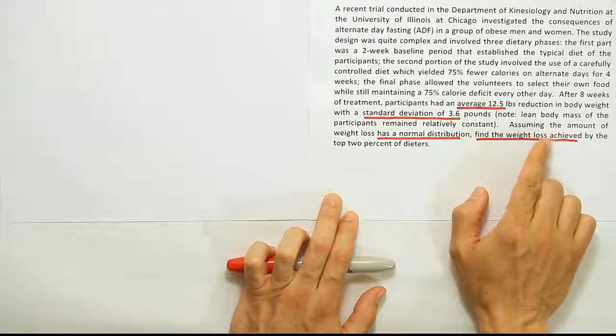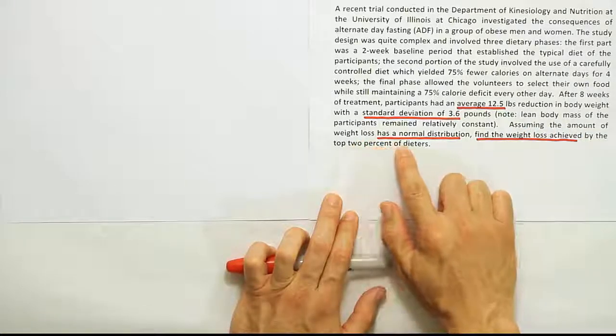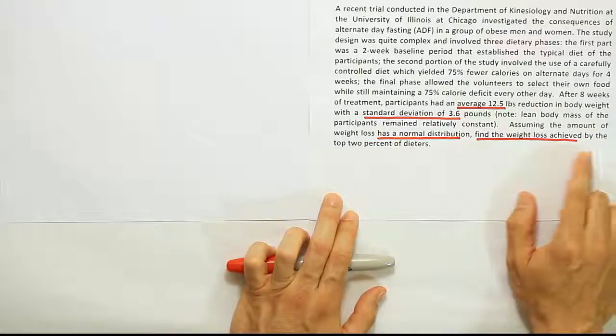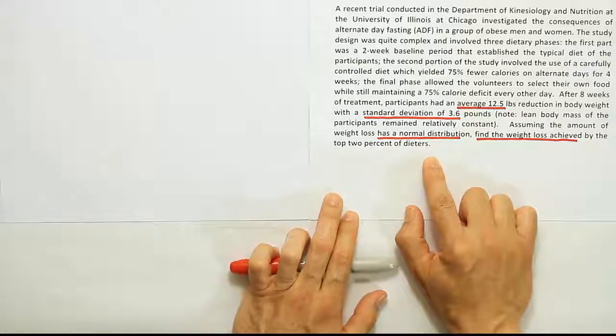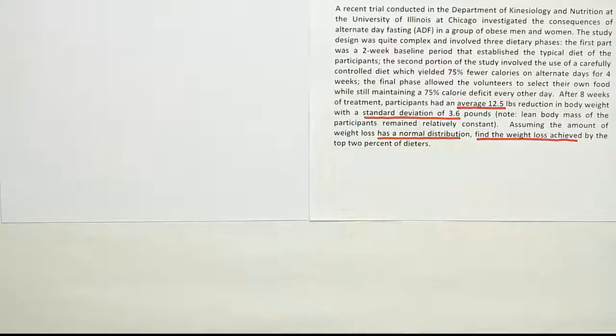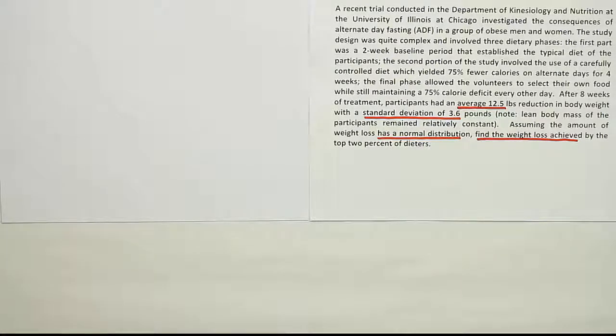So what we're looking for here is assuming that the weight loss has a normal distribution, find the weight loss achieved by the top 2% of dieters, right? So first thing I want to notice, normal distribution tells me I should do a bell curve. So I'm going to go ahead and draw a bell curve on our sheet of paper here. And we're going to use that bell curve to solve the problem.